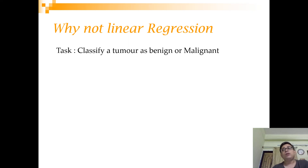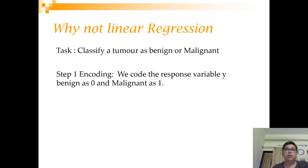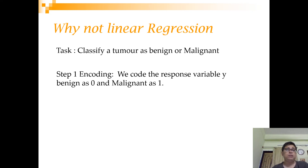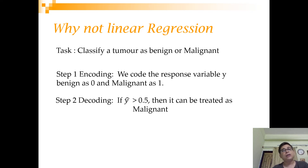Let's say you have a task where you want to classify a tumor as benign or malignant. Linear regression expects the response variable to be numeric, so one approach is to encode benign as 0 and malignant as 1. You then calculate beta 0 and beta 1, and when a new tumor comes in, you predict y-hat and check whether it is beyond the midpoint — more than 0.5 — and classify accordingly.